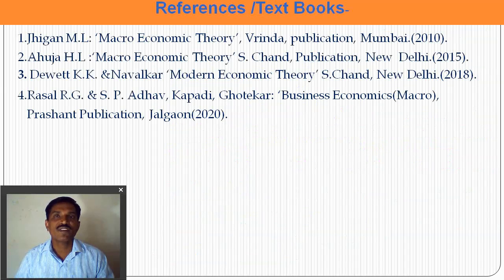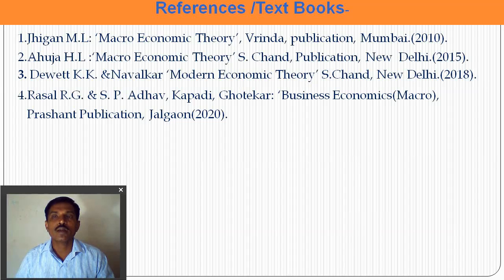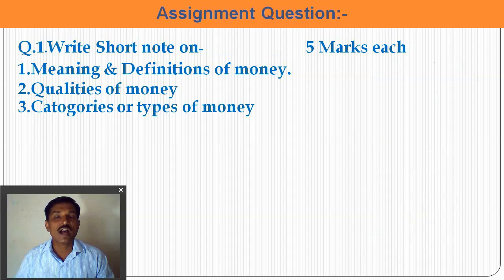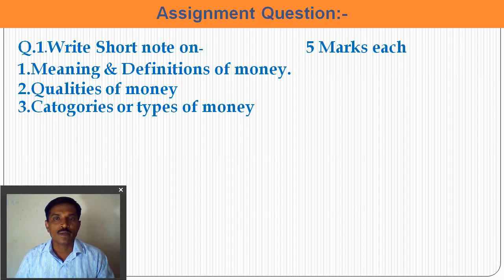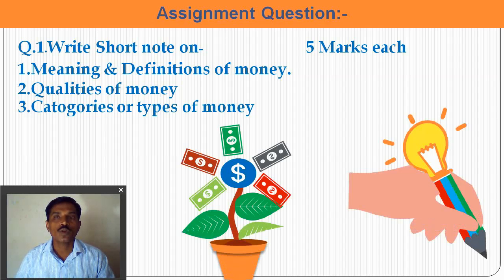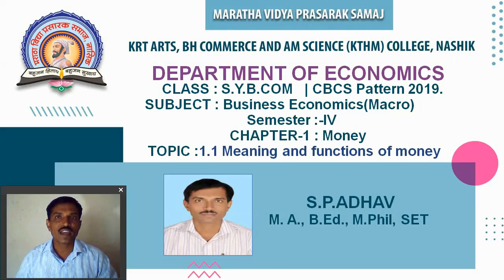For references, you can use M.L. Jhingan's Macroeconomic Theory, H.L. Ahuja's Macroeconomic Theory, and other business economics macro publications. Assignment questions for the examination include: meaning and definition of money, qualities of good money, and categories/types of money such as fiat money, commodity money, and virtual money. Thank you for watching this video. In the next video, we will look at the next point.